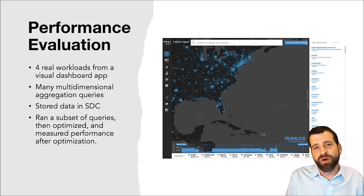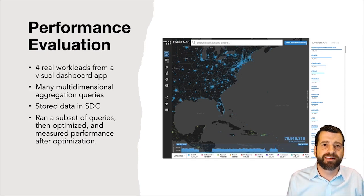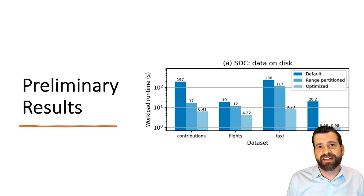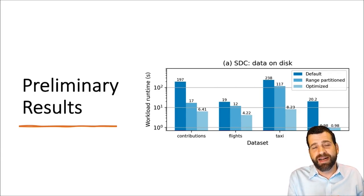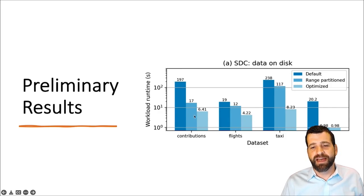To show you why we're excited about the performance possibilities of SDCs, we built our initial implementation and ran four real workloads from a data visualization application on top of them. These workloads involve queries that predicate over multiple dimensions. One of the workloads is a tweet map, where there are geospatial predicates that zoom into a particular geographic region, as well as temporal predicates and queries on particular tweets or hashtags. We started by running a workload of queries against an unoptimized SDC representation that generated a query log, then optimized the layout and reran the queries. The optimized layout performs much, much better — often significantly better than even the best single-dimension range partitioning.